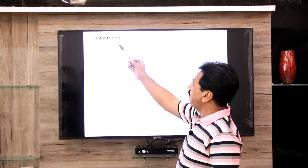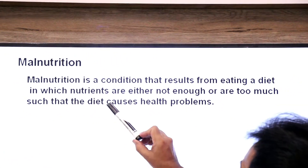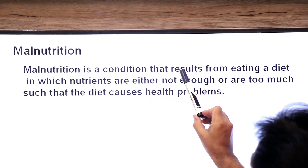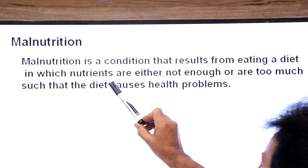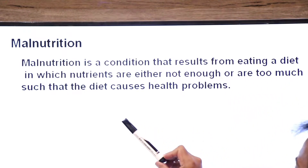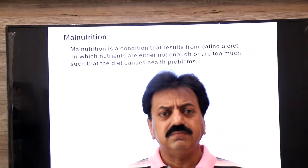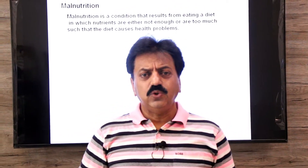Assalamu alaikum, namaste dear students. In today's lecture we will learn about two eating disorders: one is known as malnutrition and then we will discuss about food poisoning. So let's start from malnutrition. First of all, definition — what is malnutrition? Malnutrition is a condition that results from eating a diet in which nutrients are either not enough or too much, such that the diet causes health problems.